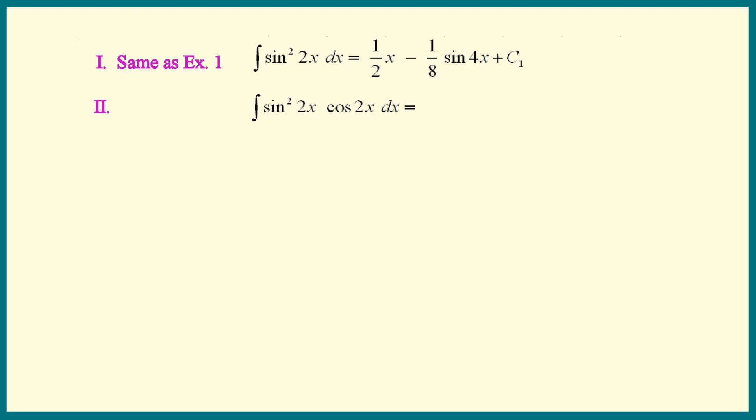The second integral is a u sub. We know that the sine 2x is going to be our u. We need du right next to it. Du is cosine of 2x times 2. That means we need a 1 over 2 outside.